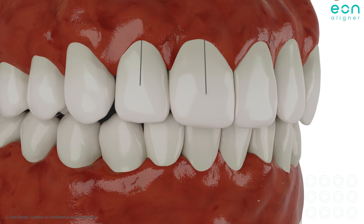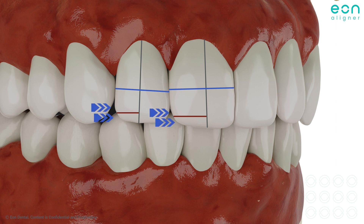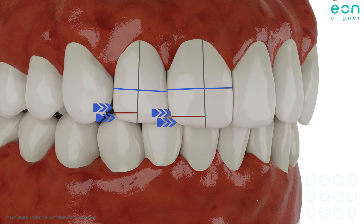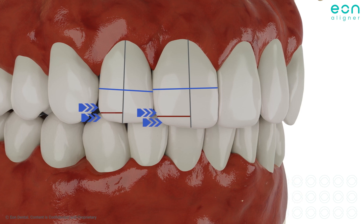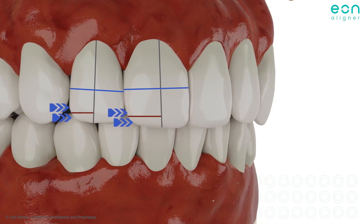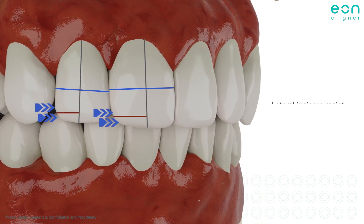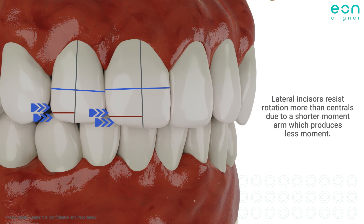Another point, related to their mesiodistal width, is the shorter arm of moment produced when trying to apply a push force on the most lateral extent of the crown in comparison to the central incisor, as shown here. This will produce less moment, eventually making rotation more challenging.